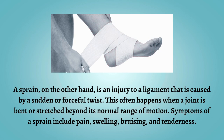A sprain, on the other hand, is an injury to a ligament that is caused by a sudden or forceful twist. This often happens when a joint is bent or stretched beyond its normal range of motion. Symptoms of a sprain include pain, swelling, bruising, and tenderness.